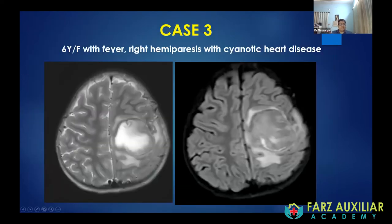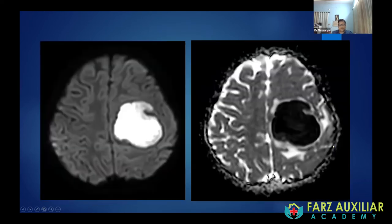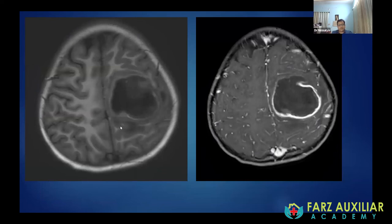The third case is a six-year-old female with fever and right hemiparesis, with a history of cyanotic heart disease — tetralogy of Fallot. On T2, there is a well-defined hyperintense lesion with surrounding edema; the signal is partially suppressed on FLAIR. On diffusion-weighted imaging, the lesion shows intense diffusion restriction — appearing bright on DWI and dark on the ADC map. On post-contrast T1, there is peripheral ring enhancement with central non-enhancement. This is a classic case of a pyogenic cerebral abscess.